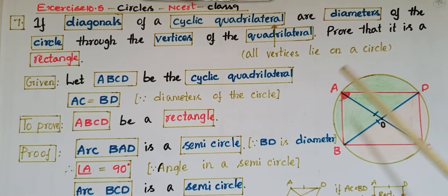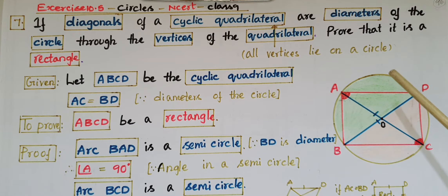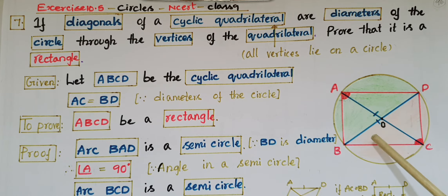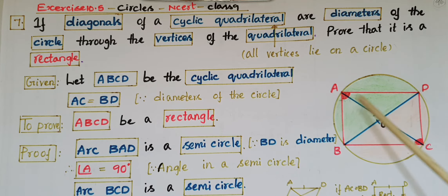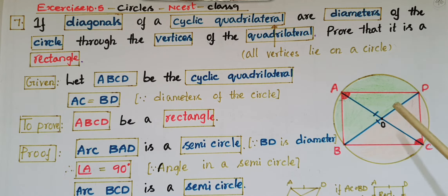Now, we have to prove that ABCD is a rectangle. Here, the diagonals are already equal. So, if we prove it is a parallelogram, then we know that if the diagonals of a parallelogram are equal, then it is a rectangle. So, first prove that it is a parallelogram — it is a quadrilateral, that is given. You can check the second problem from Exercise 8.2 from the Quadrilaterals chapter for reference.